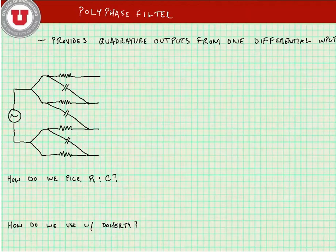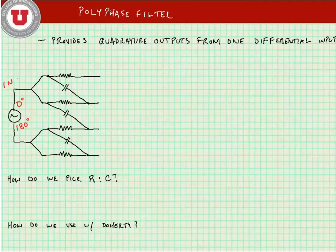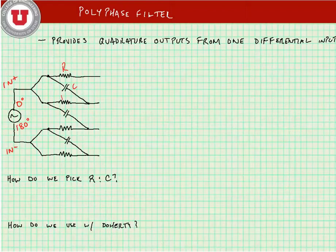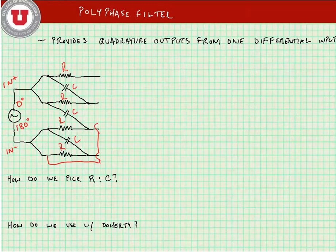A polyphase filter is a filter that provides quadrature outputs from one differential input. Here we put our input signal in, and we'll call this a differential input signal. So we're using both the positive and negative terminal of the input source. If we size these R's and C's appropriately, all R's and all C's will be identical in this structure.